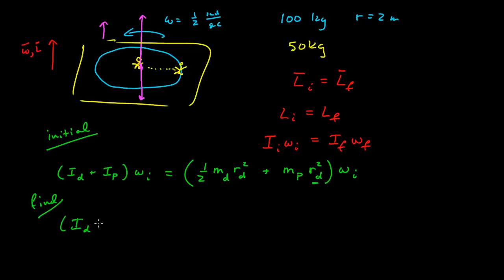For the final state, we again have the moment of inertia of the disk plus the moment of inertia of the person final, times the final angular velocity. The moment of inertia of the disk didn't change — it was the location of the person that changed. So this is one-half mass of the disk times r of the disk squared, plus now the mass of the person times the location of the person relative to the axis. If they're at the center, their distance from the axis in the particle approximation is zero. So the moment of inertia changed as the person walked to the center.